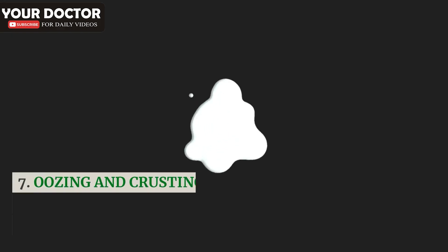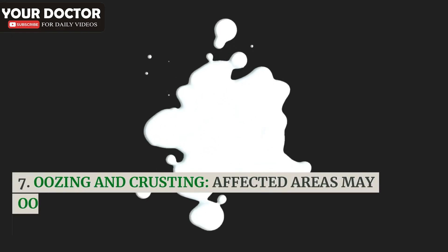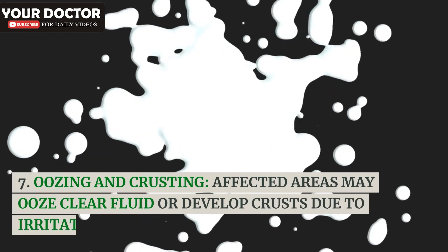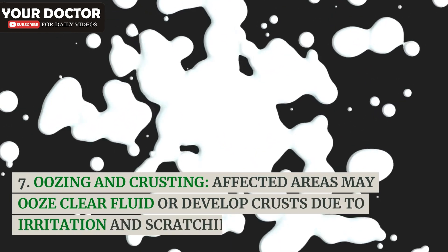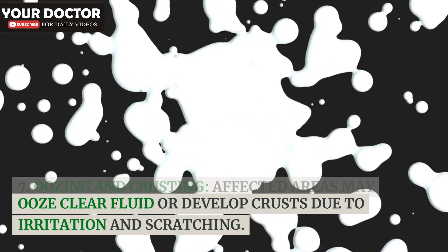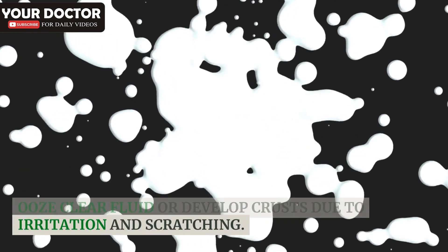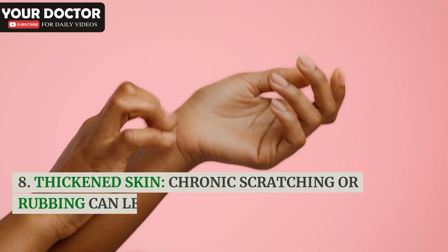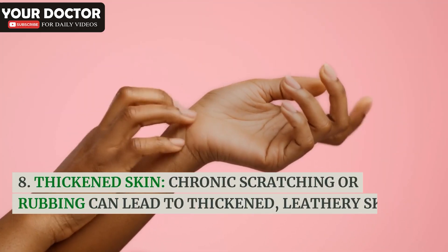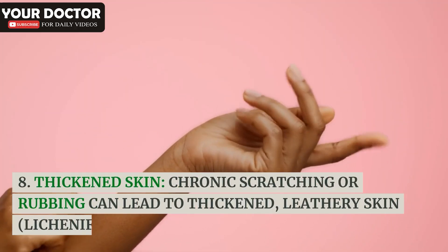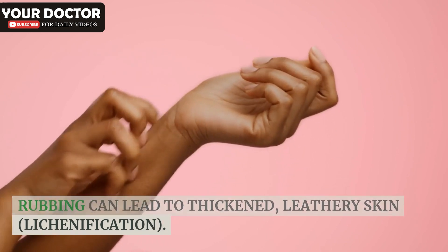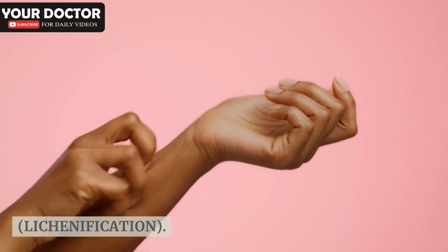Oozing and crusting: affected areas may ooze clear fluid or develop crust due to irritation and scratching. Thickened skin: chronic scratching or rubbing can lead to thickened, leathery skin, known as lichenification.